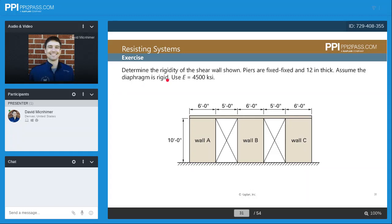Let's go through an exercise to apply some of these techniques. We're told to determine the rigidity of the shear wall shown below. Here's our fixed-fixed condition and 12 inches in thickness. We're told to assume the diaphragm is rigid and use E equals 4500 KSI. In this case, we need to distribute the loads to the walls based on their rigidity, but we're told to determine the rigidity of the total shear wall, which is probably because we have a rigid diaphragm.